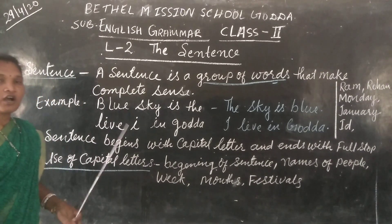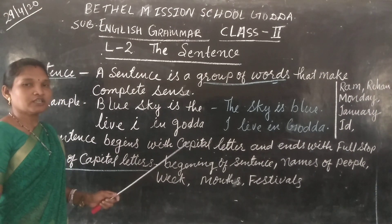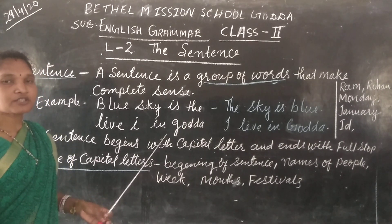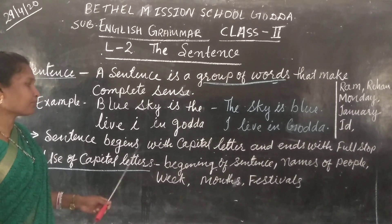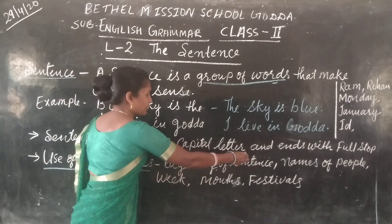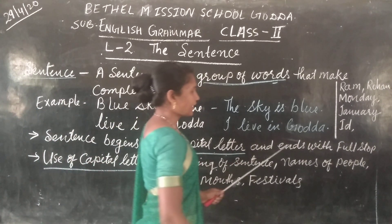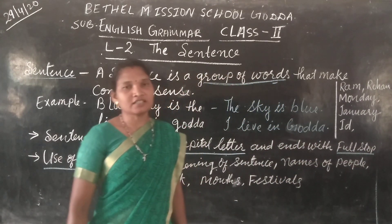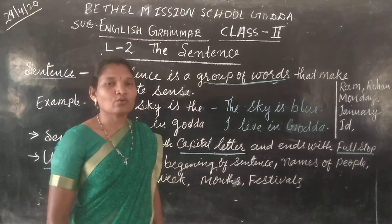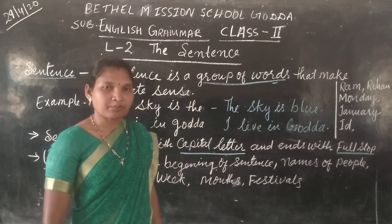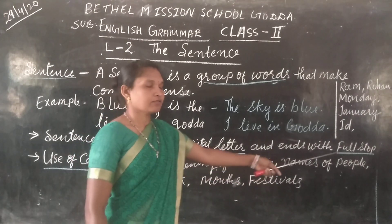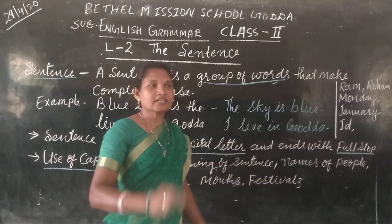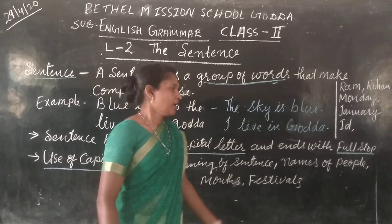So whenever you write any word or a sentence, the sentence begins with a capital letter and ends with a full stop. Whenever you write a sentence, the sentence always begins with a capital letter and ends with a full stop. Full stop means that the sentence has stopped there.